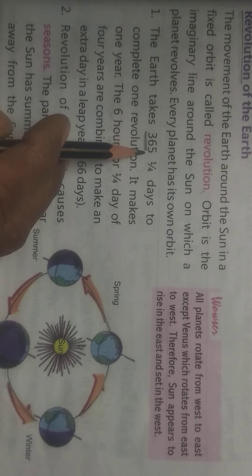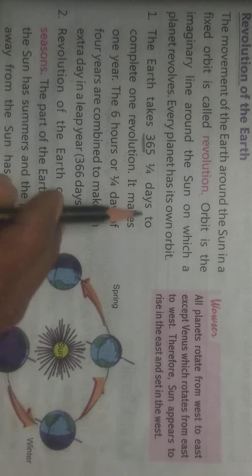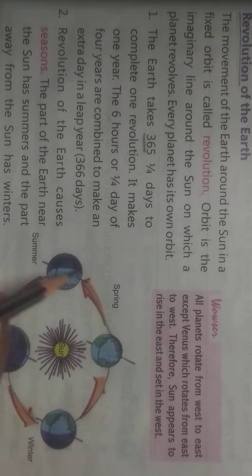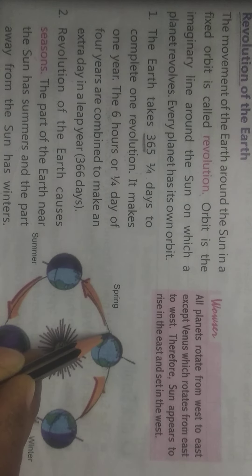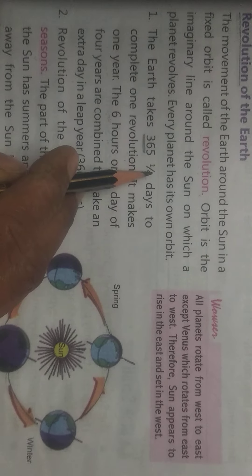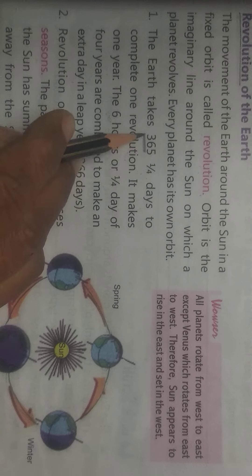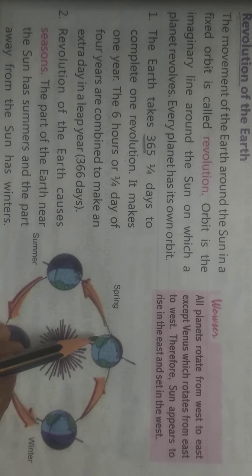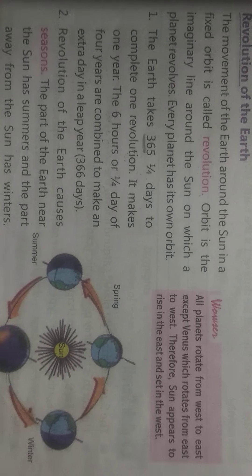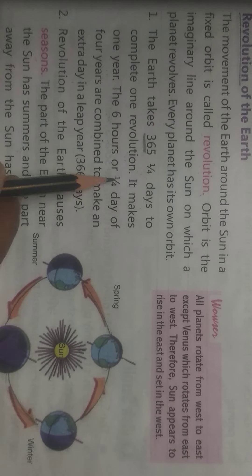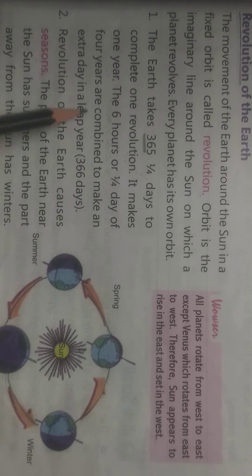The earth takes 365 and one-quarter days to complete one revolution — it makes one year. Earth yahan start hoke sun ke charo aur ghoom ke, fir same point par aane ke liye 365 and one-fourth day leti hai. One year equals 365 days. And the six hours or one-fourth day of four years are combined to make an extra day in a leap year.